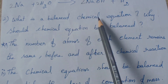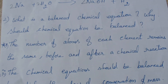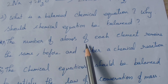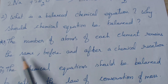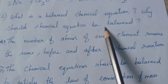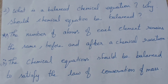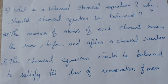What is a balanced chemical equation? The number of atoms of each element remains the same before and after a chemical reaction — that is called a balanced equation. Why should a chemical equation be balanced? A chemical equation should be balanced to satisfy the law of conservation of mass. We will stop here and continue with more balancing of equations in the next class. Thank you.